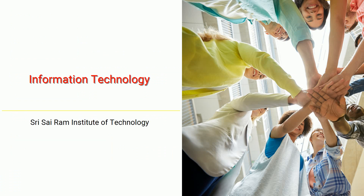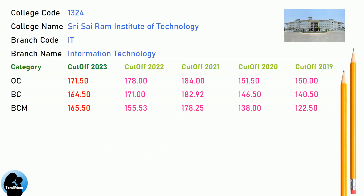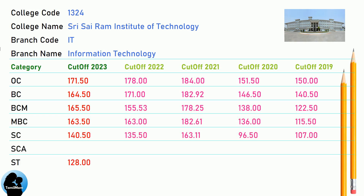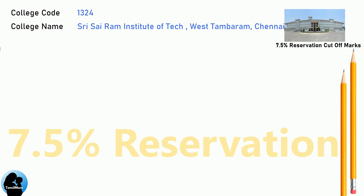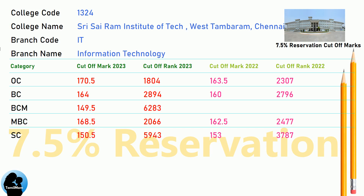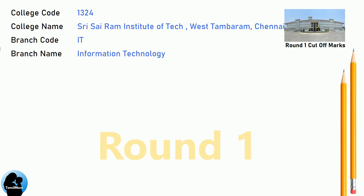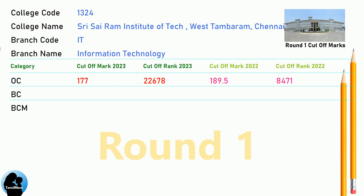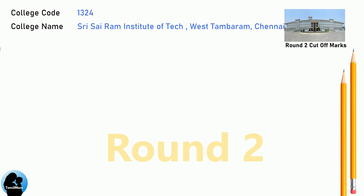DNA Cut-Off for Shri Sai Ram Institute of Technology in Information Technology. DNA 7.5 Reservation Cut-Off for Sri Sai Ram Institute of Technology in Information Technology. DNA Round 1 Cut-Off and DNA Round 2 Cut-Off for Sri Sai Ram Institute of Technology in Information Technology.